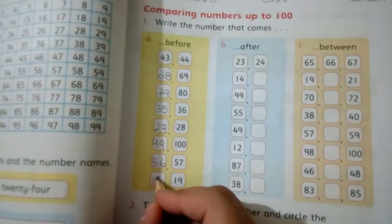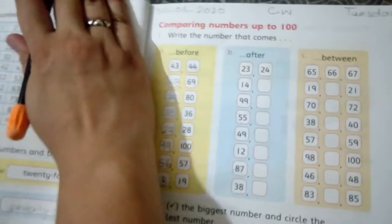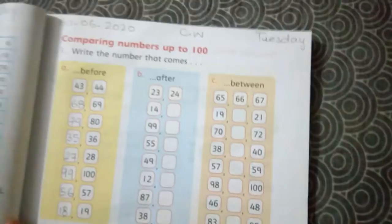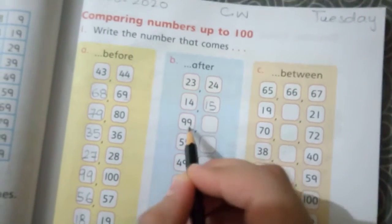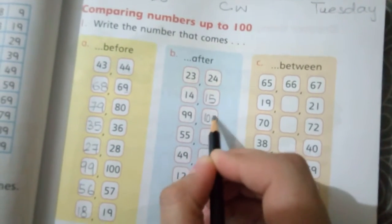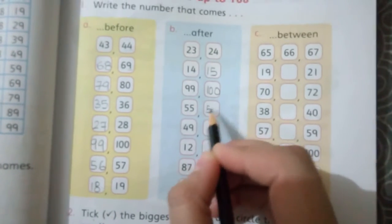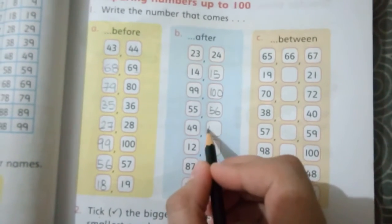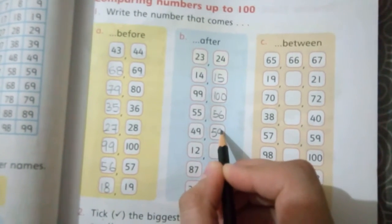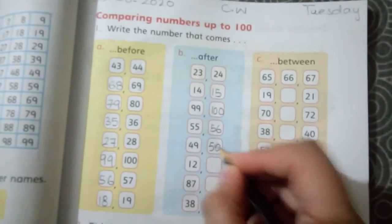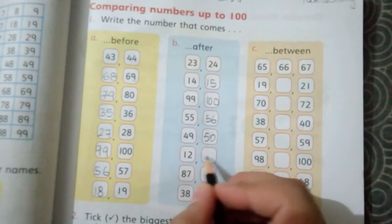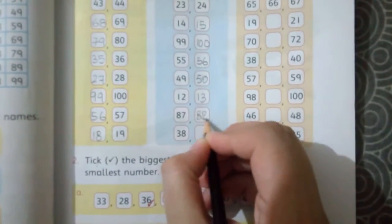Those students who memorized counting well will have no issue with this. This is very simple and easy work. What comes after? After 23 is 24. After 14 is 15. After 99 is 100. After 55 is 56. After 49 is 50. After 12 is 13. After 87 is 88. After 38 is 39.